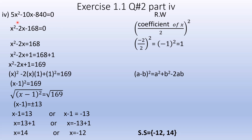In order to show you, the question given is: 5x² minus 10x minus 8 is equal to 0. In Part 4, you will understand how to solve using the completing the square method.